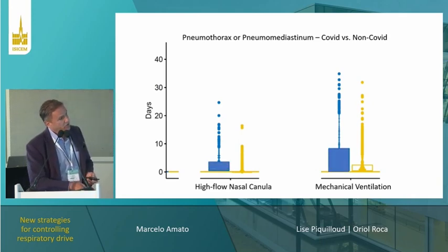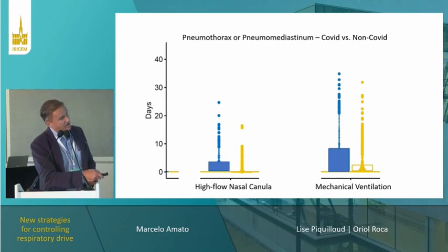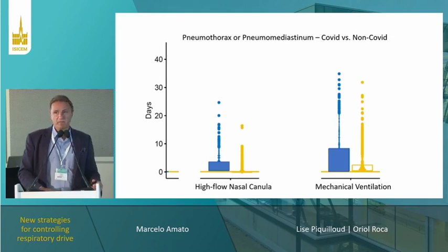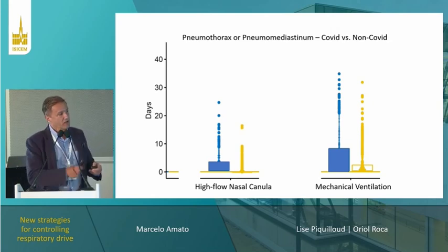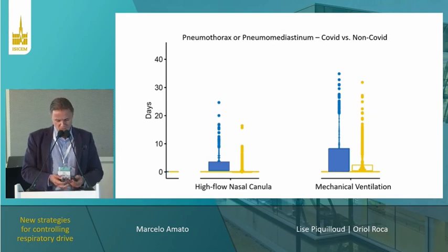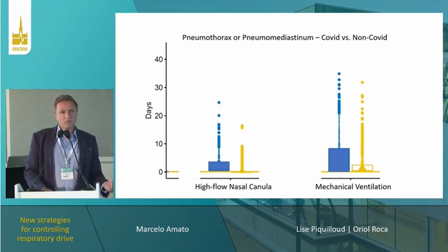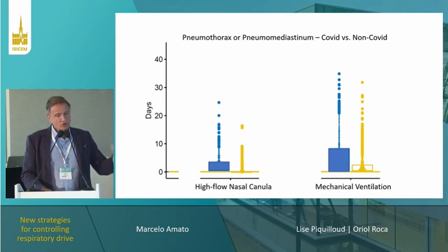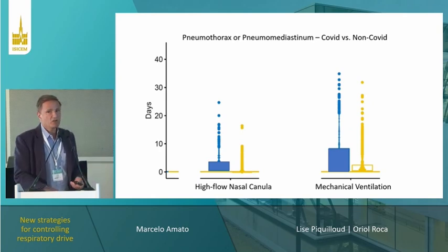In blue are COVID patients, in yellow is common ARDS. As you can see, it's a late phenomenon in COVID — not in the acute phase, but when the patient is spontaneously breathing after waking up, during the assisted phase of mechanical ventilation. Typically in ARDS it occurs in the acute phase. So why do we see so many cases of pneumomediastino in COVID without intubation, and during intubation much more in the assisted phase than in ARDS?